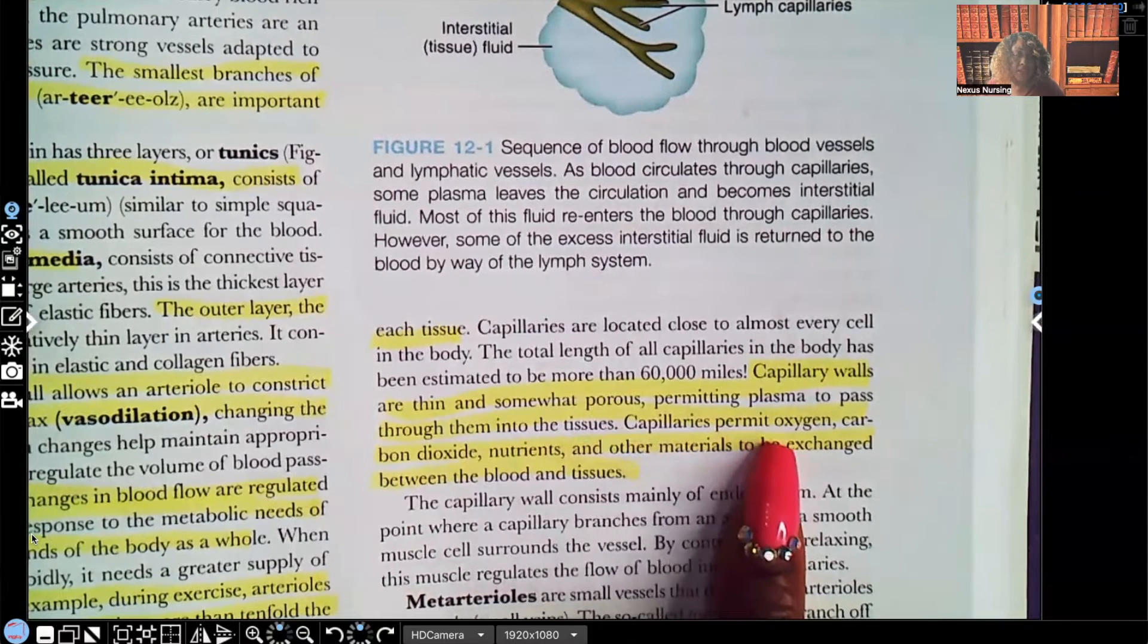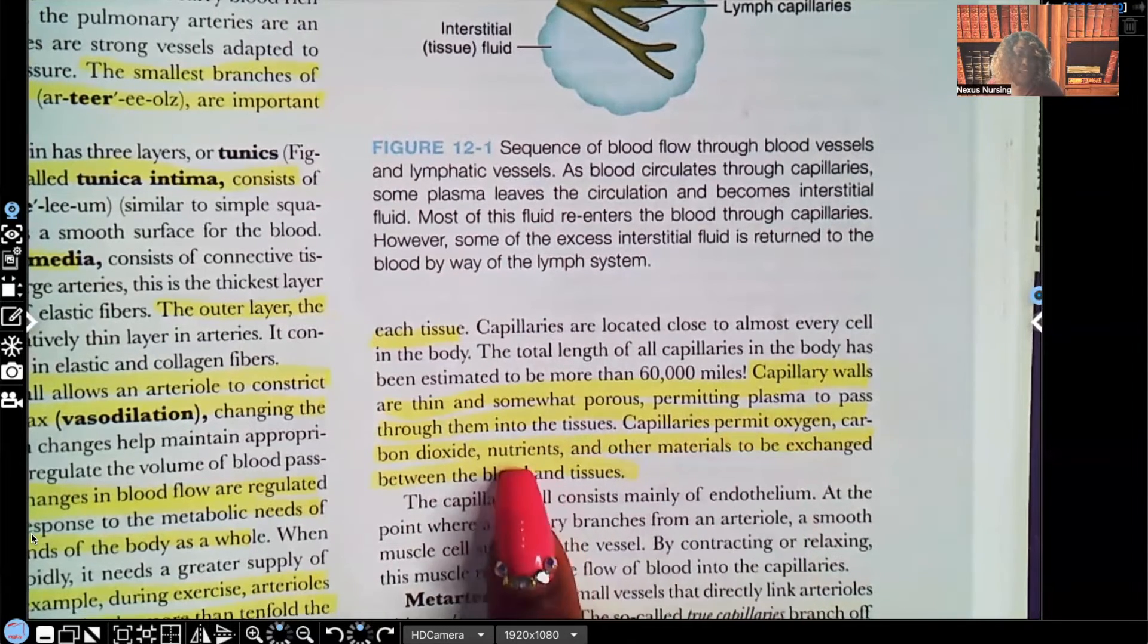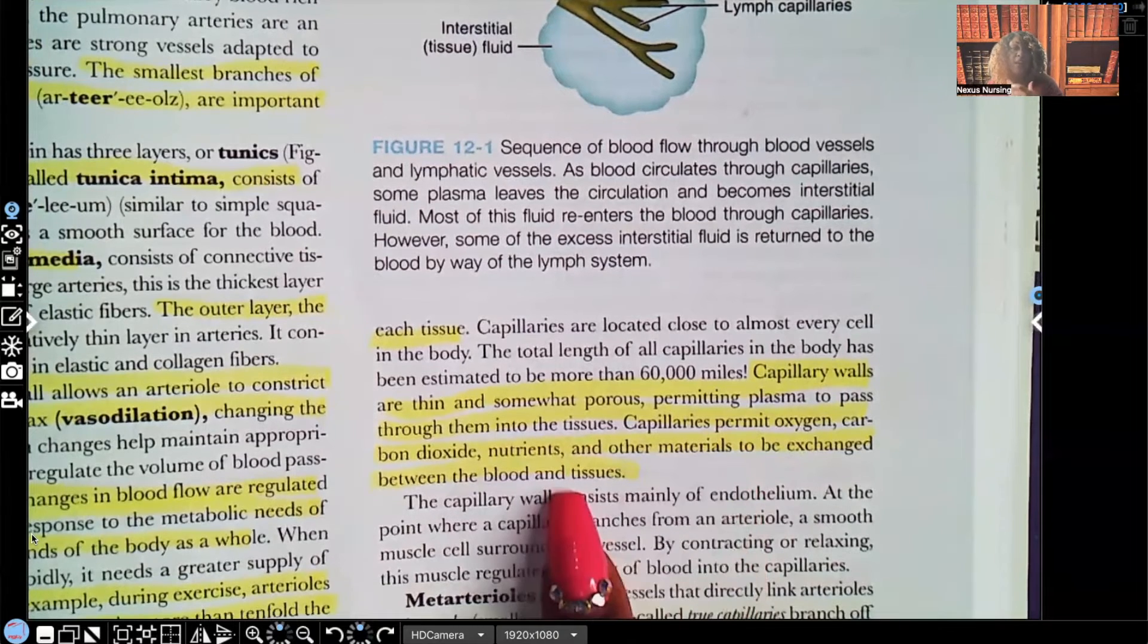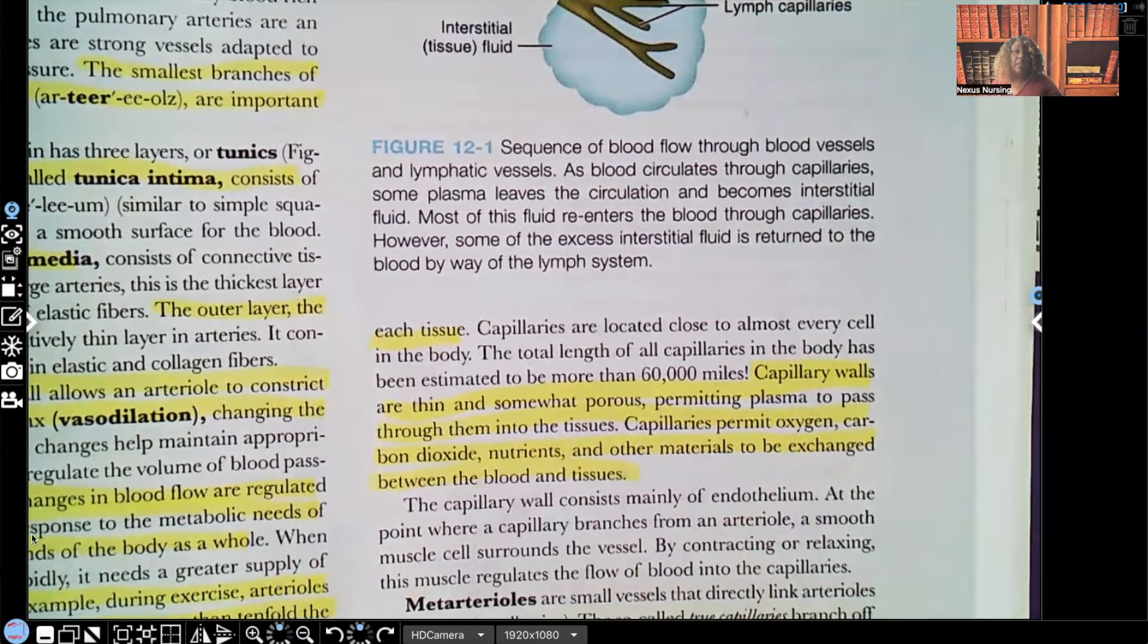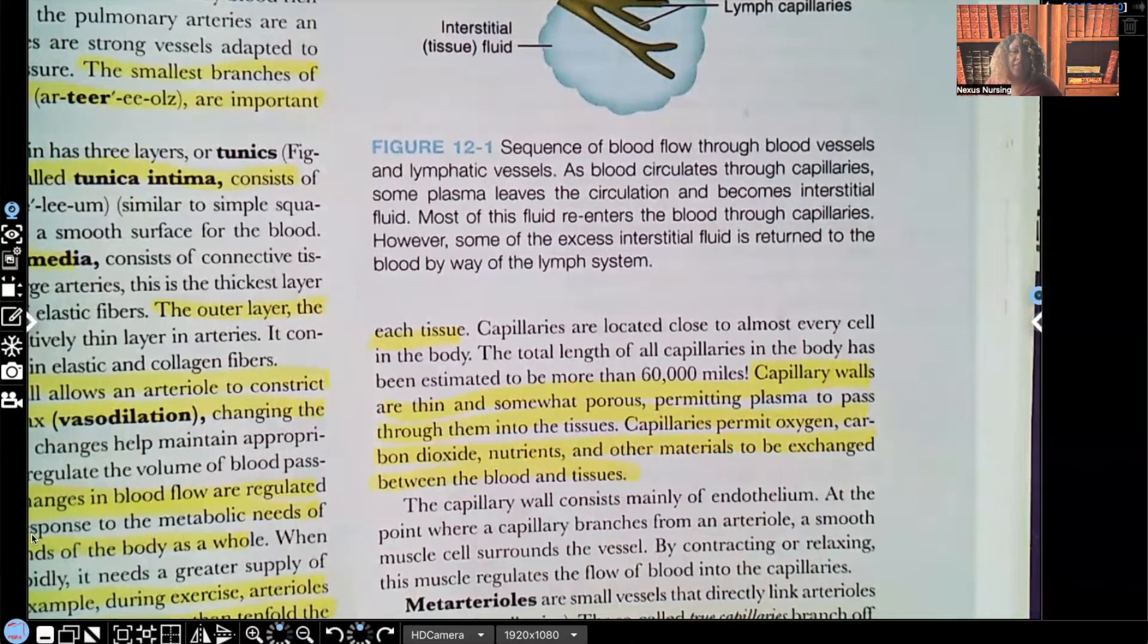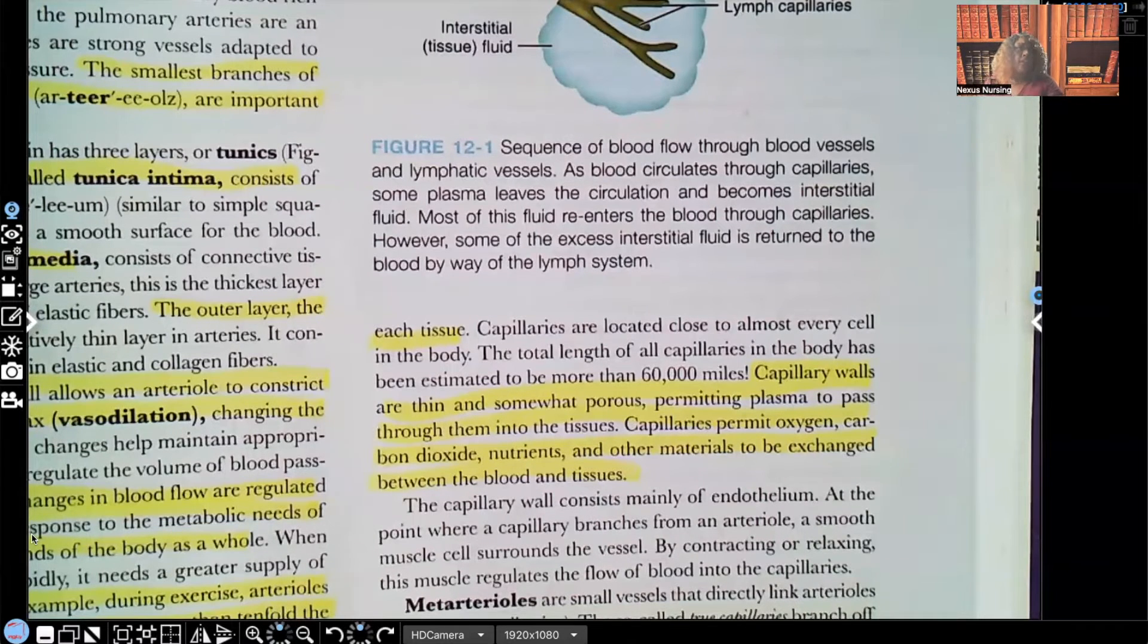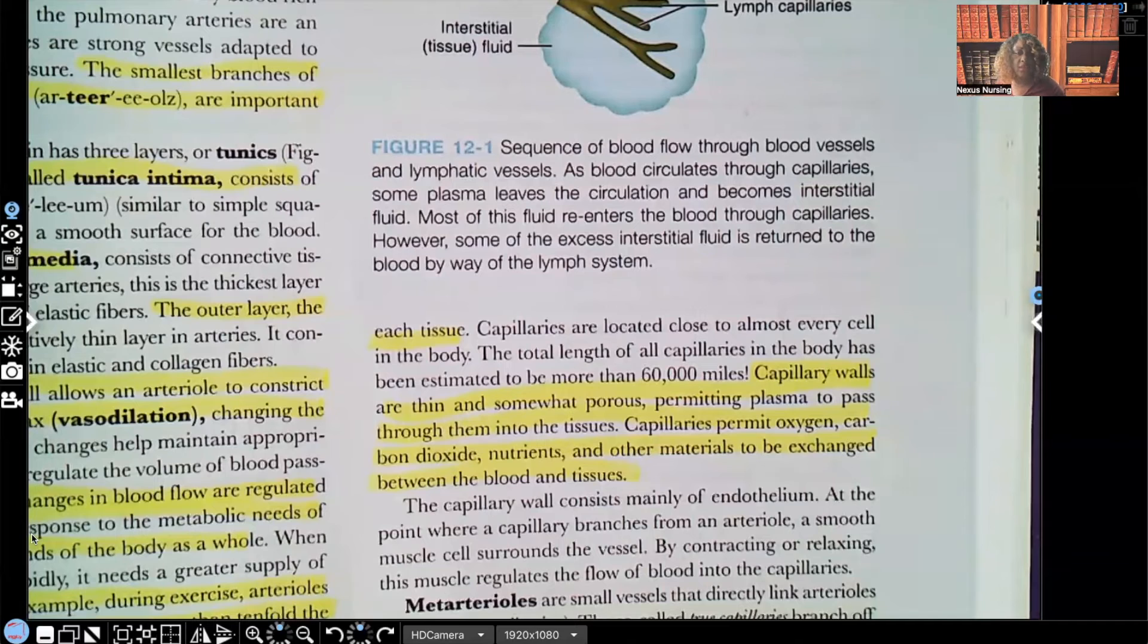Capillaries permit oxygen, carbon dioxide, nutrients, and other materials to be exchanged between blood and tissues. So, let's get this straight. What's jumping out of the capillaries to go to the tissues? The oxygen, the vitamins, the minerals, the nutrients. What is jumping into the capillaries to go get excreted? The waste, such as carbon dioxide, nitrogen.